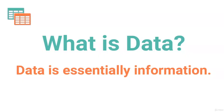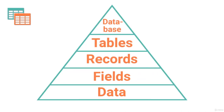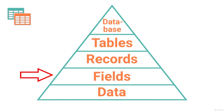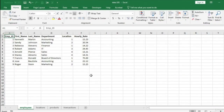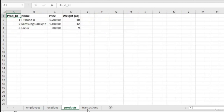Welcome to section two of our Microsoft Excel tutorial — a crash course on data. This is a relatively shorter section, but it's extremely important for every Excel user to understand relational data and the terminology related to data. Data is essentially information. A database is an organized collection of data. A database consists of tables, and tables consist of records. In this example, the workbook named 'Data 101' represents a database, and each worksheet represents a different database table.